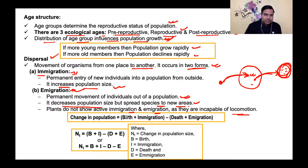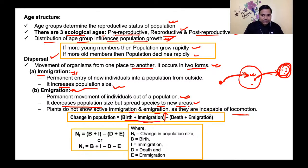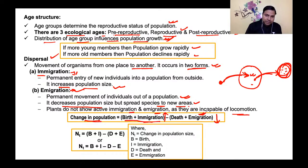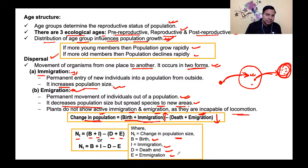The change in population can be expressed mathematically. Birth plus immigration increases population size, while death plus emigration decreases it. The formula is: Nt = b + i − (d + e), where Nt is change in population size, b = birth, i = immigration, d = death, and e = emigration. If death plus emigration is greater, the population will decline.